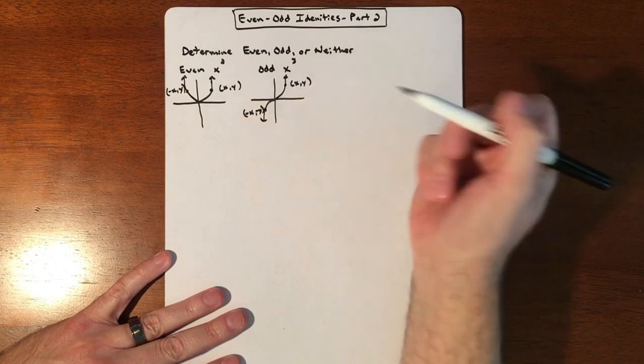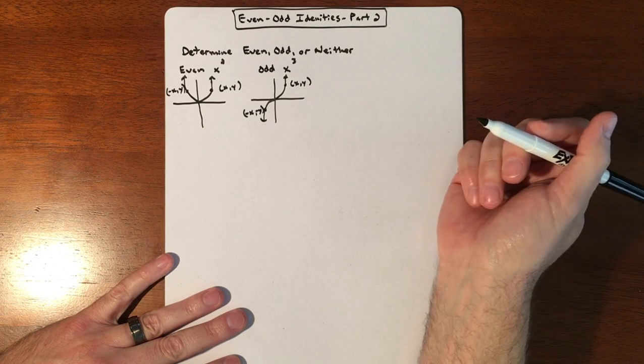So the idea here is it's symmetrical around the origin. So if you rotated this 180 degrees, it's going to look exactly the same. Those points are going to line up.